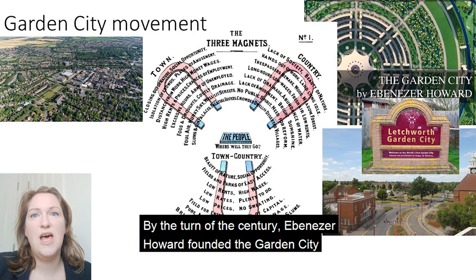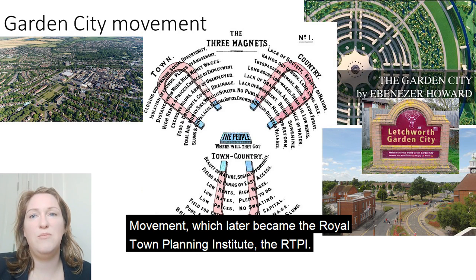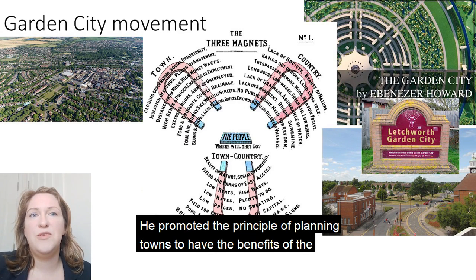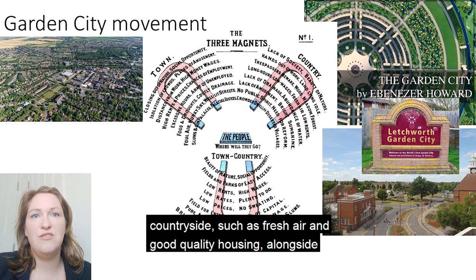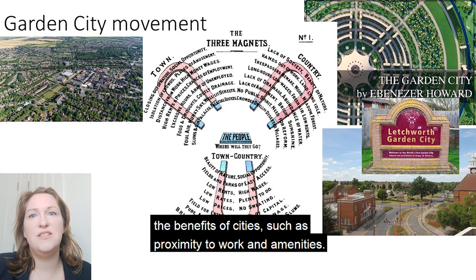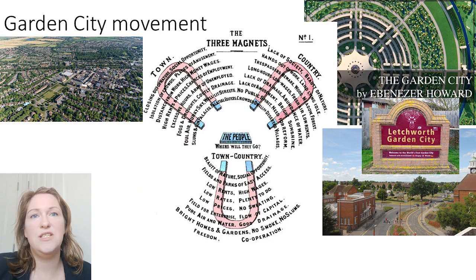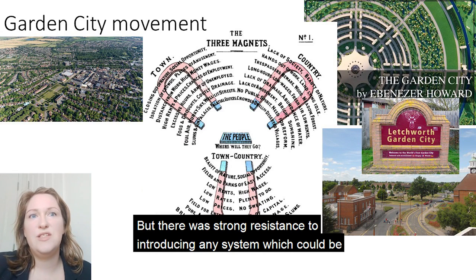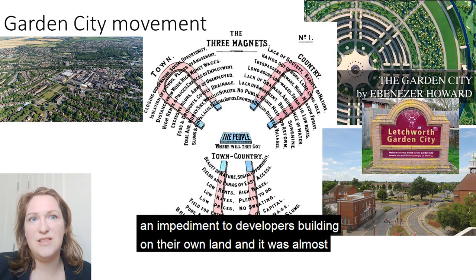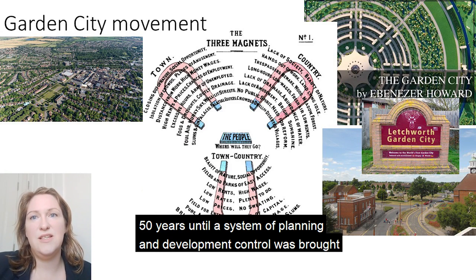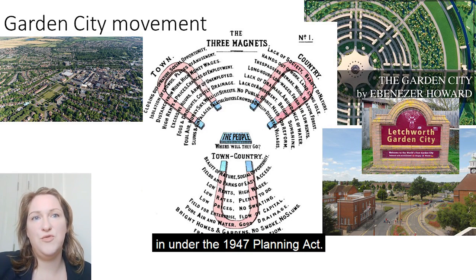By the turn of the century, Ebenezer Howard founded the Garden City movement which later became the Royal Town Planning Institute, the RTPI. He promoted the principle of planning towns to have the benefits of the countryside such as fresh air and good quality housing, alongside the benefits of cities such as proximity to work and amenities. But there was strong resistance to introducing any system which could be an impediment to developers building on their own land, and it was almost 50 years until a system of planning and development control was brought in under the 1947 Planning Act.